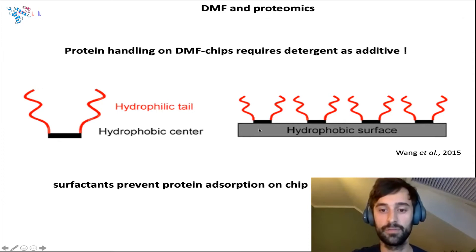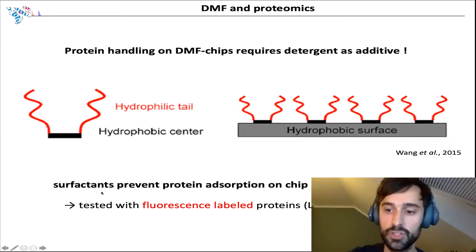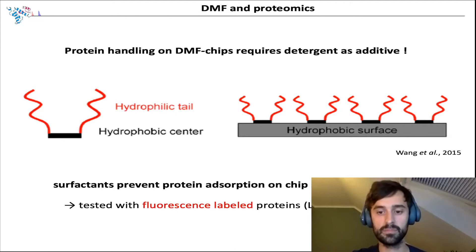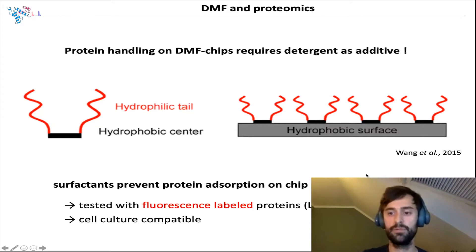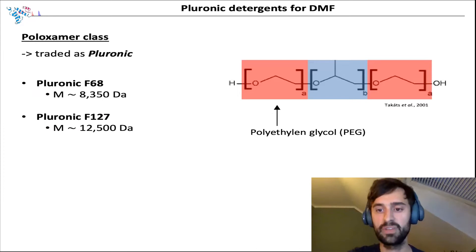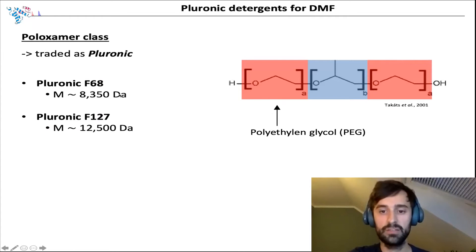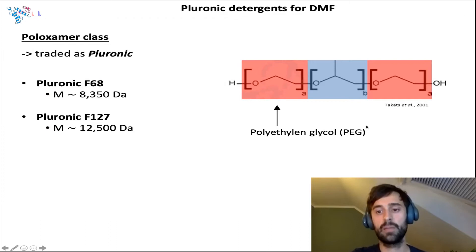The efficiency of these detergents to prevent fouling was previously shown by investigating fouling with a fluorescent-labeled protein. Also, some of these detergents are cell culture compatible, which is very important when we load cells onto the chips. However, these detergents also have their drawbacks. One class very often used in DMF is the poloxamer class. These very large molecular weight polymers — some people might already notice the PEG motifs in them — are a very common contaminant in LC-MS and hard to get rid of.